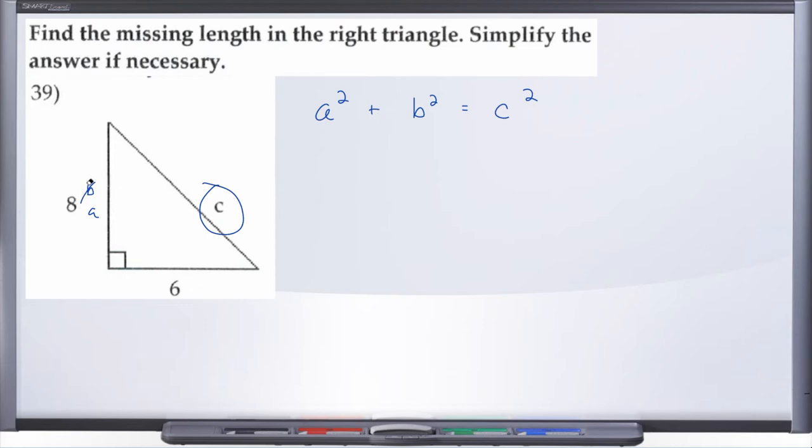So let's go ahead and start plugging in some information here. We'll call the base a, the side b, and we're trying to solve for c. So a² is 6², plus b² which is 8², equals c².